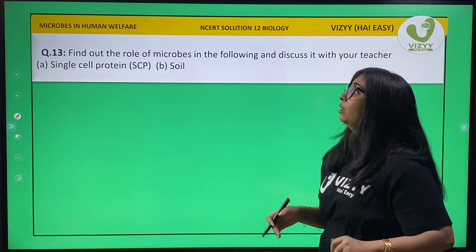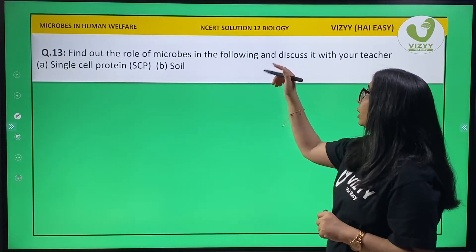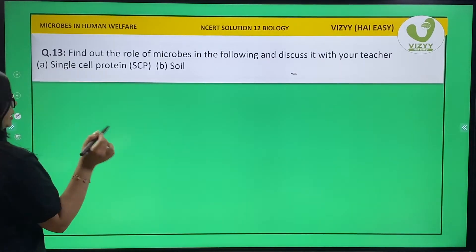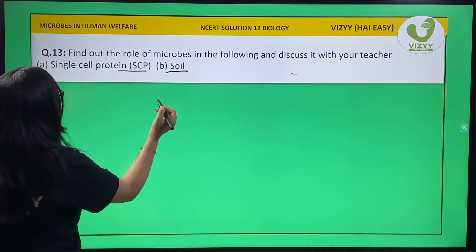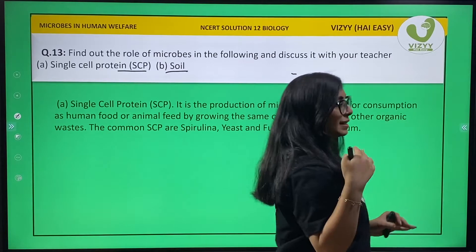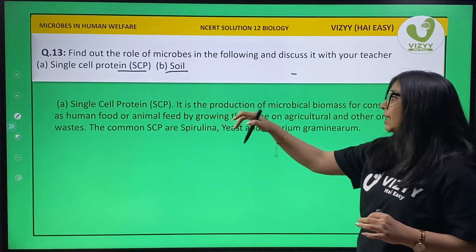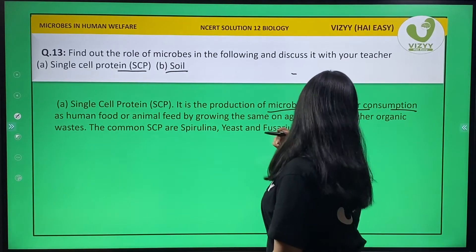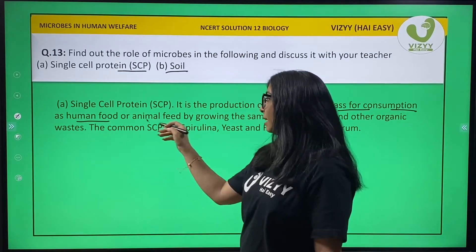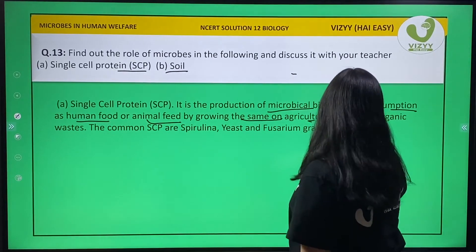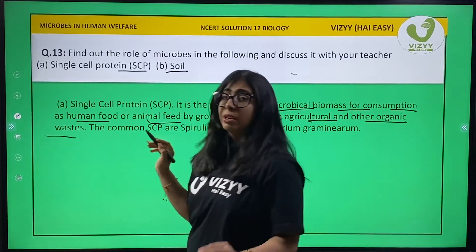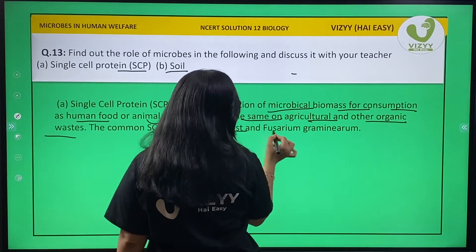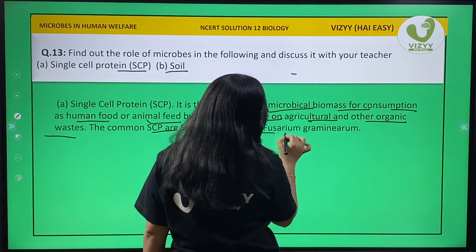Question number 13: find out the role of microbes in the following and discuss it with your teacher. First is single-cell protein (SCP). SCP is the production of microbiological biomass for consumption as human food or animal feed, by the growth of microorganisms on agriculture and other organic waste. The common SCPs are spirulina, yeast, and fusarium graminate.